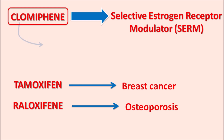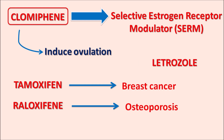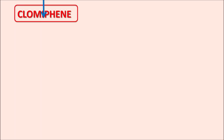Clomiphene is used to induce ovulation in anovulatory women. Another drug, letrozole, is also used to induce ovulation in anovulatory women, but letrozole is an aromatase inhibitor, not a SERM. Today we will discuss clomiphene — how it acts, and its important precautions, side effects, and contraindications.